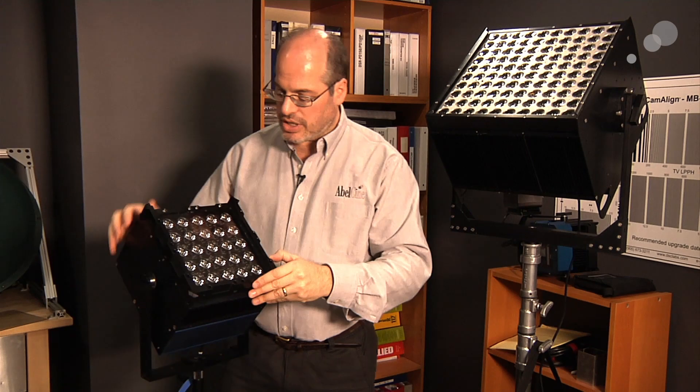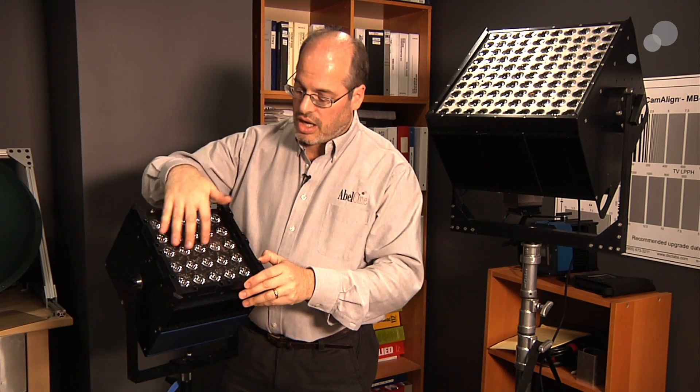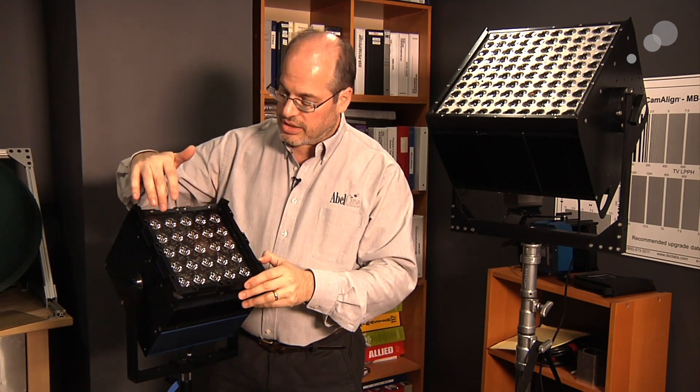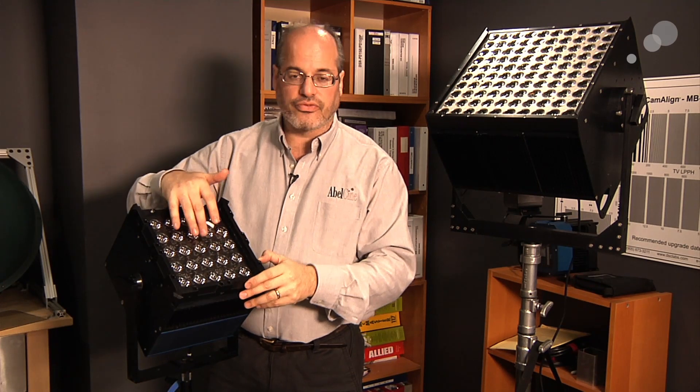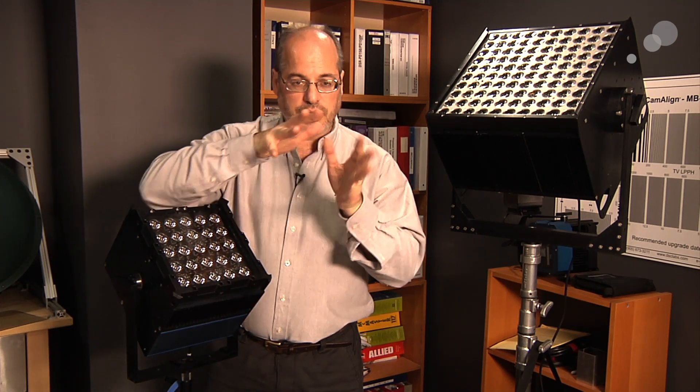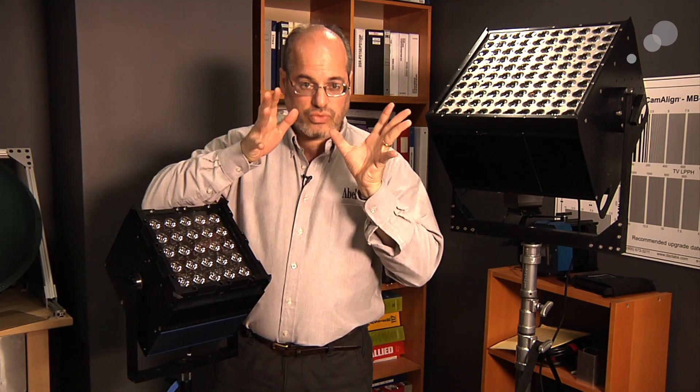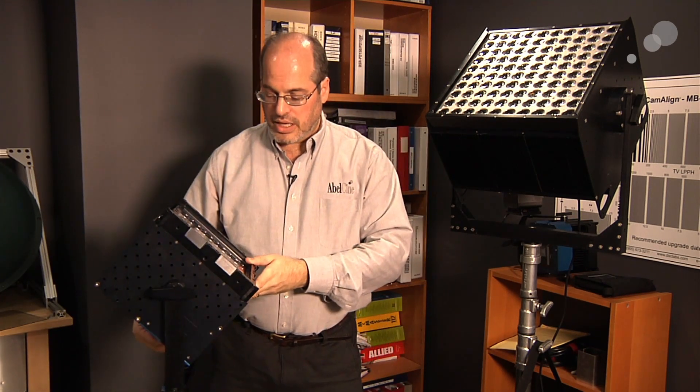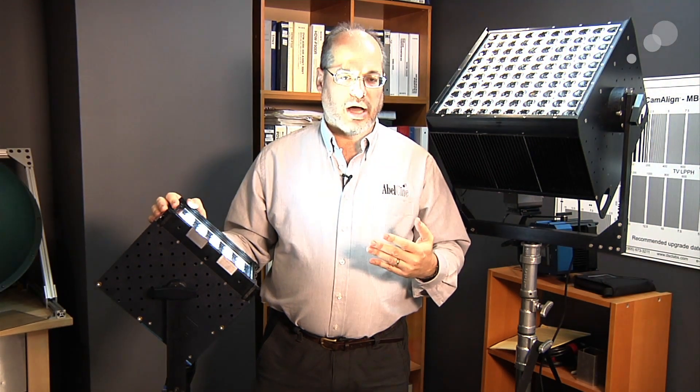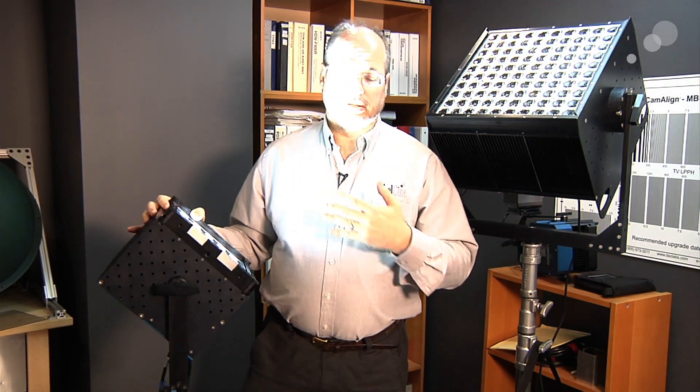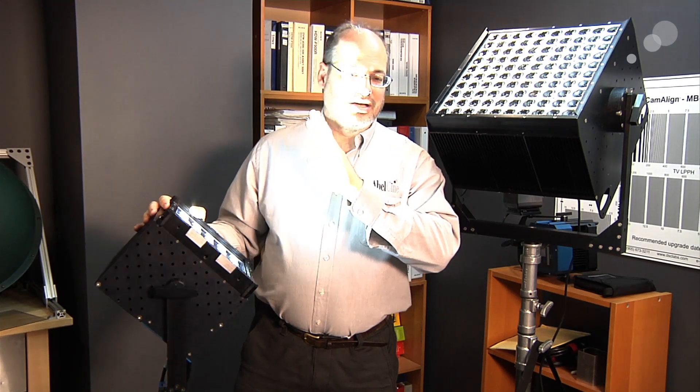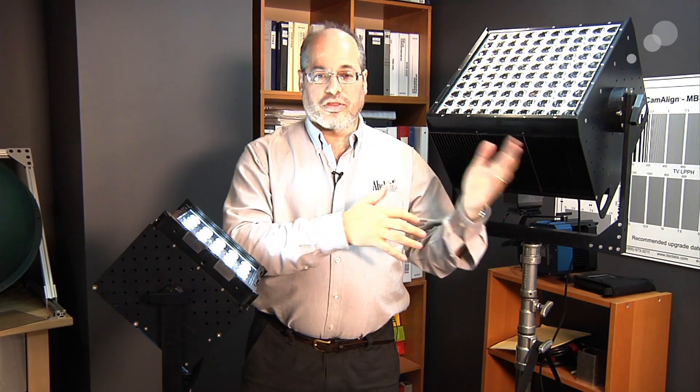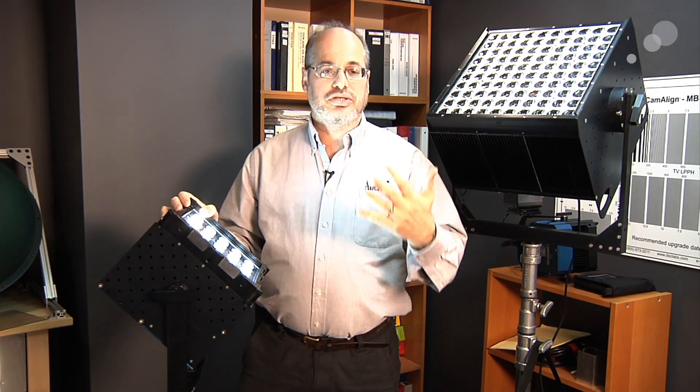This is the Boxer and you can see it is an array of LEDs where each one has a lens on the front to control the beam, to direct it, to get great efficiency out of it. The Boxer is a 200 watt light and it is the equivalent to an 800 watt HMI in brightness efficiency. It's a very bright light at one fourth the power amount. There's great savings in efficiency.